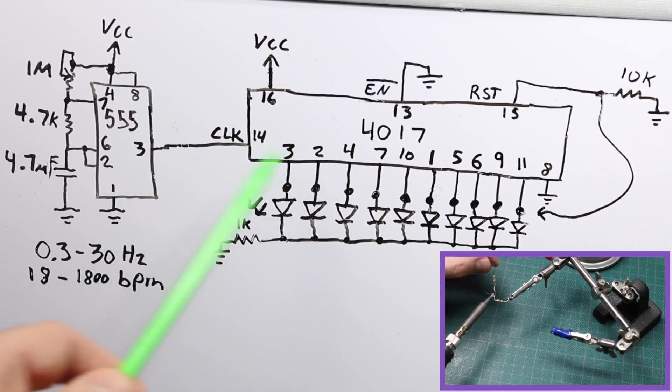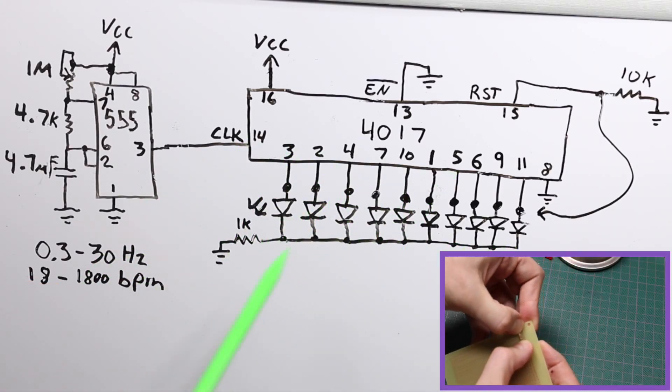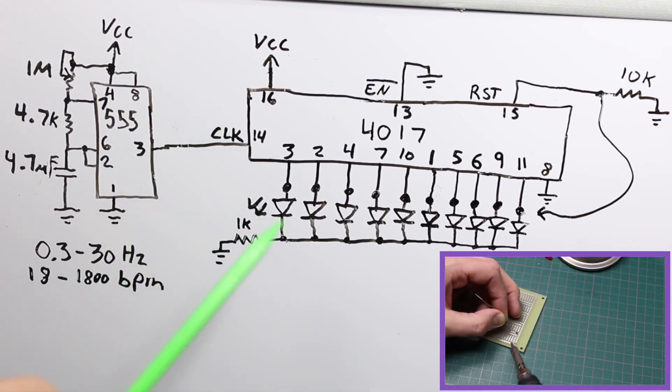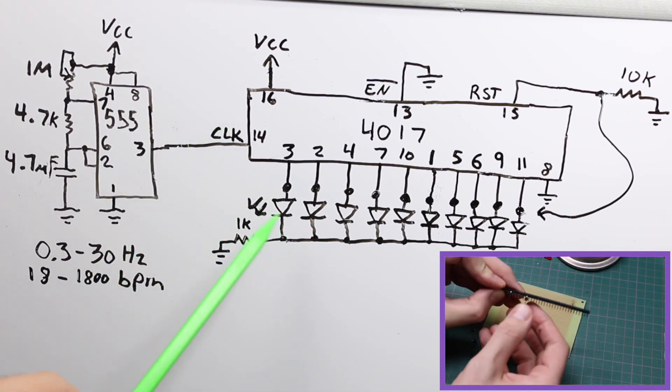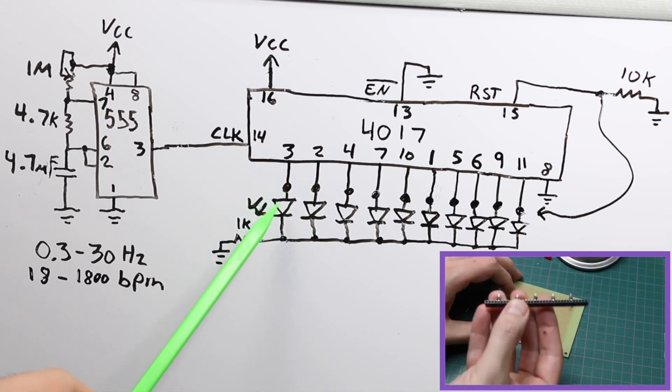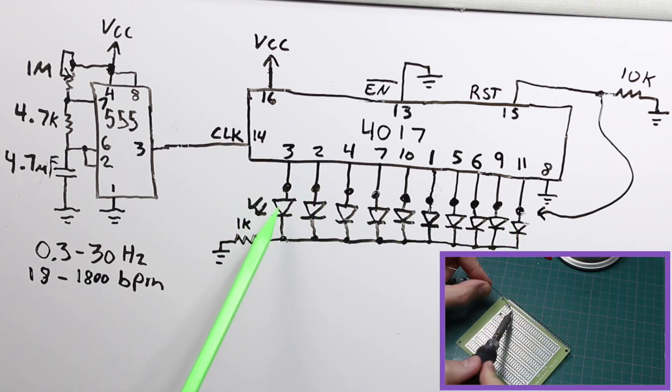Here's the standard 4017 light chaser circuit, where you have a clock coming in, and one by one, these LEDs are going to light up with only one on at a time. When it gets to the end, it will start over at the beginning.